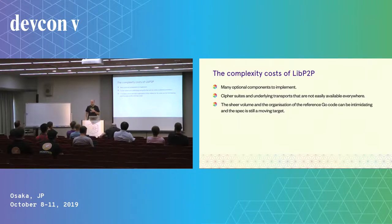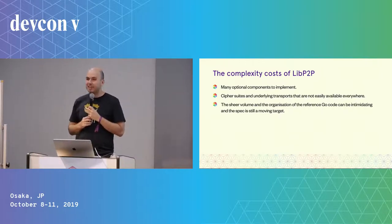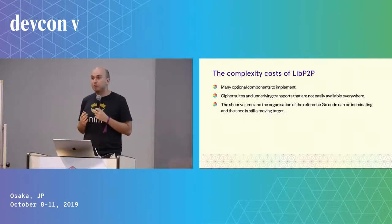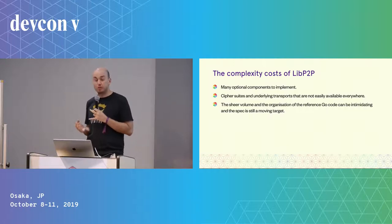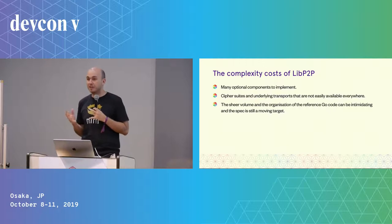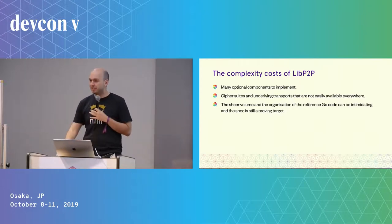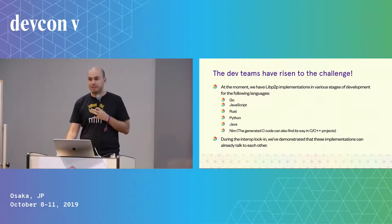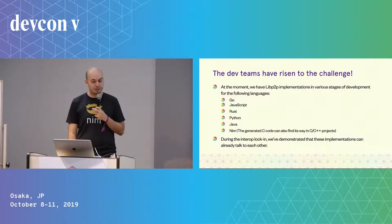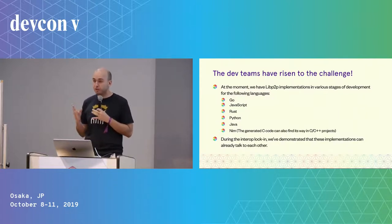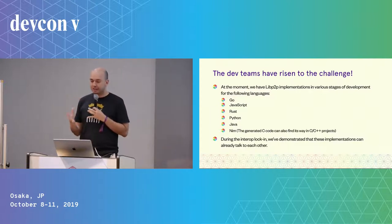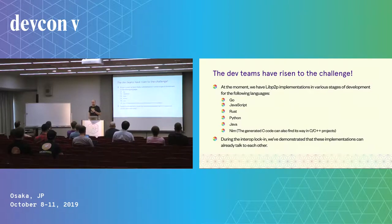libp2p comes with a significant cost. It took quite a lot of convincing for teams and quite a few years to jump on board, because the large list of components you have to implement could be intimidating. The reference code in Go is spread over multiple repositories and is hard to make sense of. Many teams were worried whether we could make it on time. But the implementation teams rose to the challenge — we now have libp2p implementations written in Go, JavaScript, Rust, Python, Java, and Nim, plus a C++ one as well.